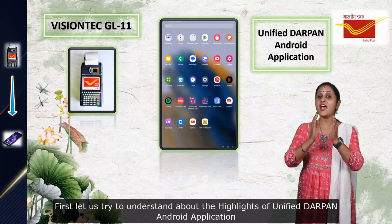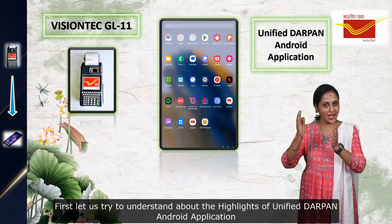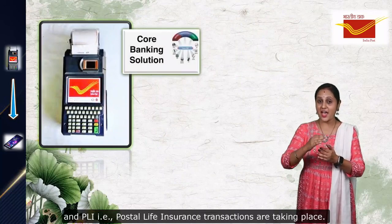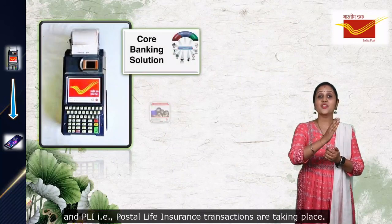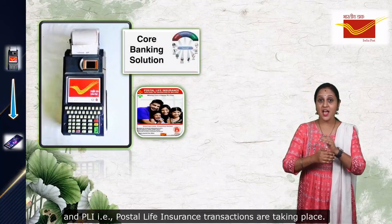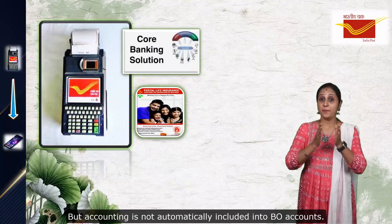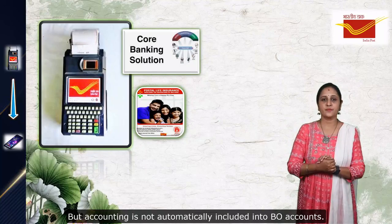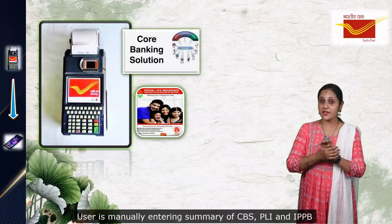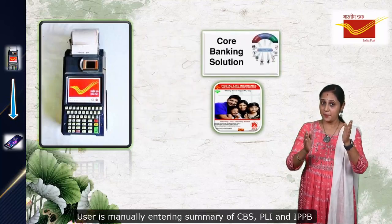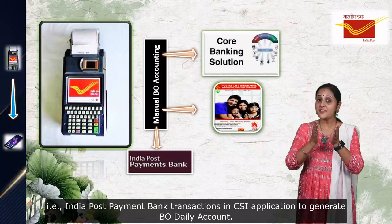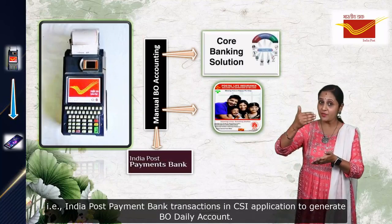Let us try to understand the highlights of the Unified Durpan Android application. In the existing RICT application, CBS — that is Core Banking Solution — and PLI — that is Postal Life Insurance — transactions are taking place. Accounting is now automatically included into VO Accounts. The user is manually entering the summary of CBS, ELI, and IPPB — that is India Post Payments Bank — transactions in the CSI application to generate the VO account.